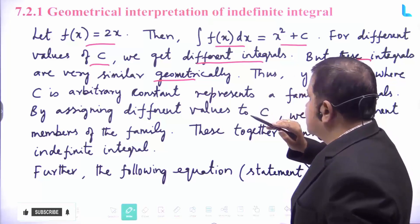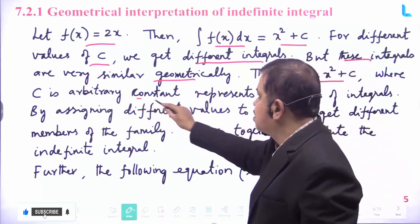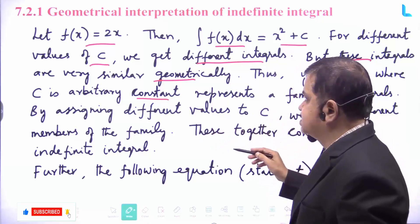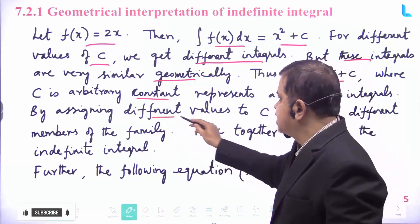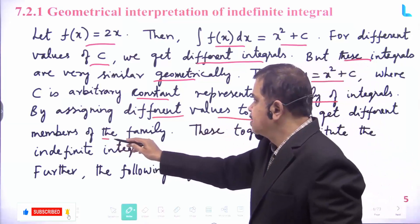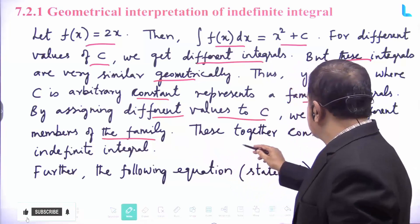Thus we can say that y = x² + c, where c is an arbitrary constant, represents a family of integrals. By assigning different values to c, we get different members of the family, and these together constitute the indefinite integral.